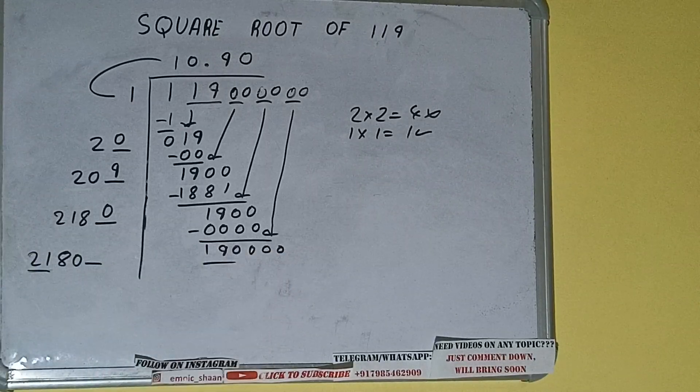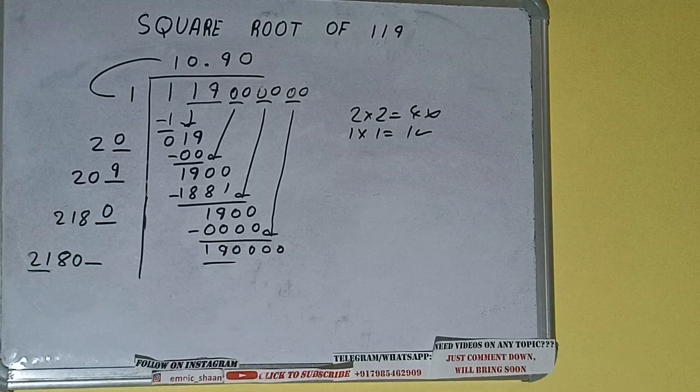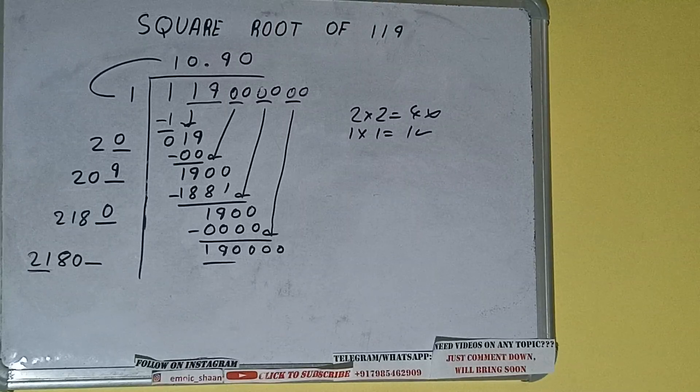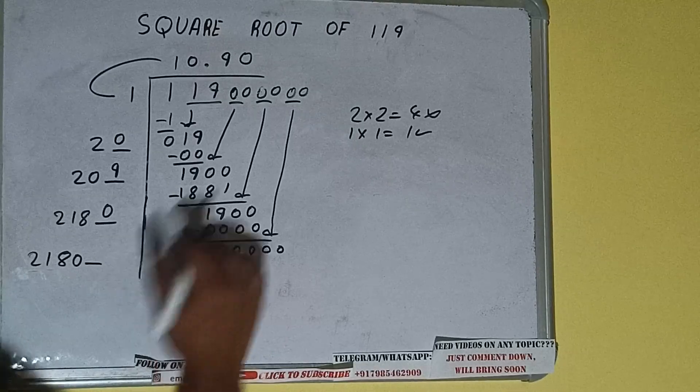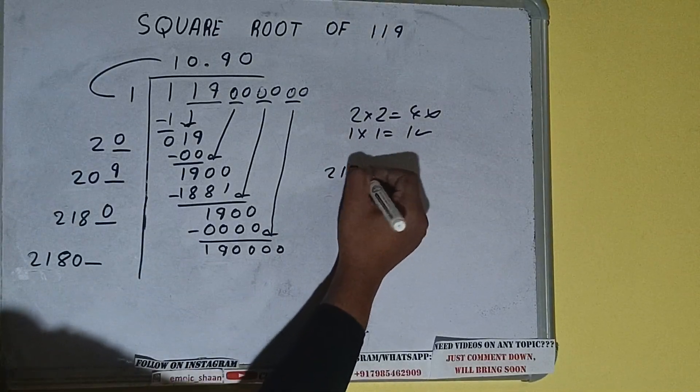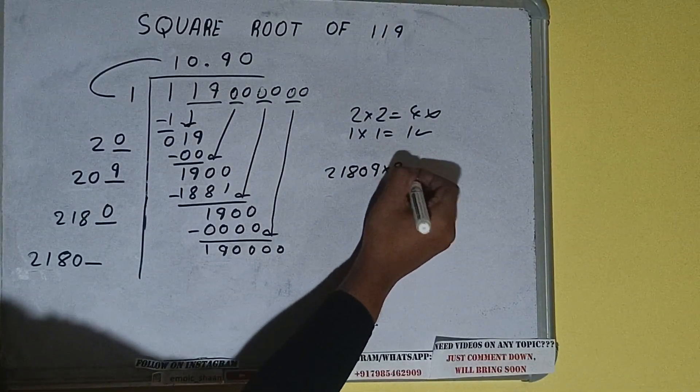So 219 times is 189, so we can try 9 times. 21809 into 9 we can try.